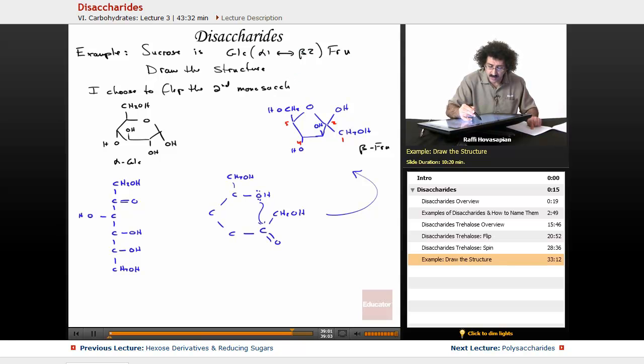I'm going to be reacting this with this. Alpha 1, beta 2. So I'm actually going to be connecting this carbon with this carbon, which means that I'm going to have to flip this so that I can bring this carbon in close proximity to this carbon. Now, when I flip this, here's what it's going to look like. I'm going to do that in red.